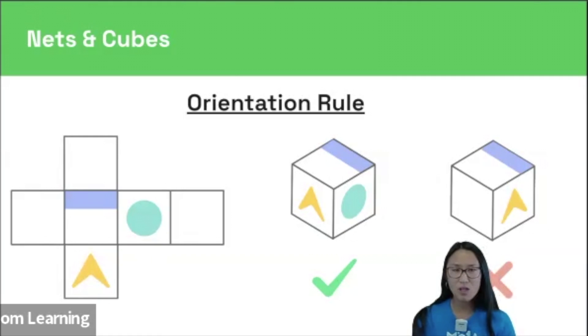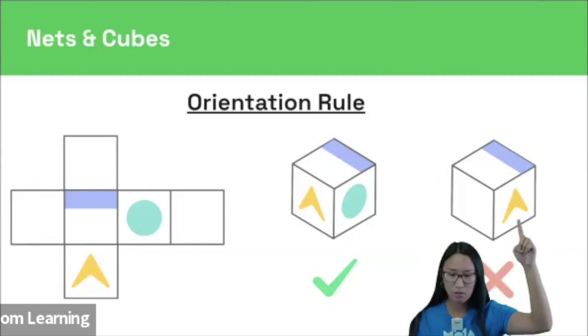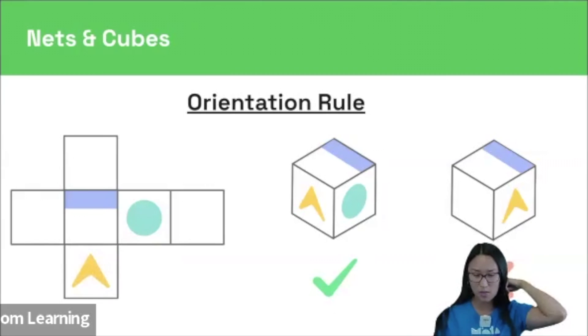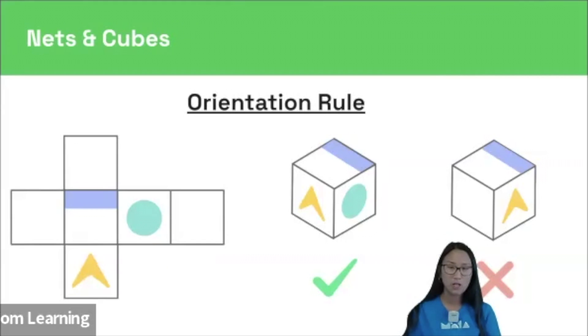In the net, the arrow is pointing at the long side of the rectangle. So the little yellow arrowhead is pointing towards the rectangle. However, over here, the triangle slash arrowhead is pointing at the short side of the rectangle. That's why we know that this cube here violates the orientation rule and it can't be made from our net.